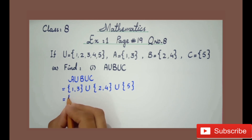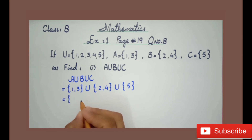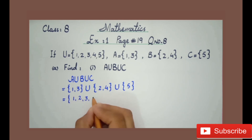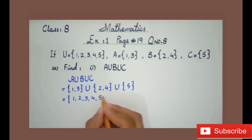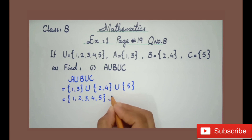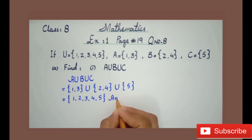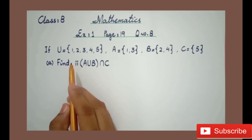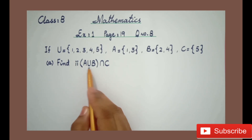Union means collecting all sets into a single set. So we will make one set of all these sets: {1, 2, 3, 4, 5}. This is the answer of A union B union C.